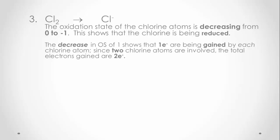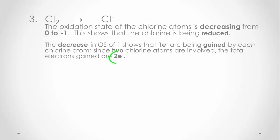When chlorine atoms are reacted to form chloride ions, the oxidation state of the chlorine decreases from 0 to negative 1. This decrease shows that the chlorine has been reduced, and the decrease of 1 shows that 1 electron has been gained by each chlorine atom. Since there are 2 chlorine atoms in a chlorine molecule, the total electrons gained will be 2.